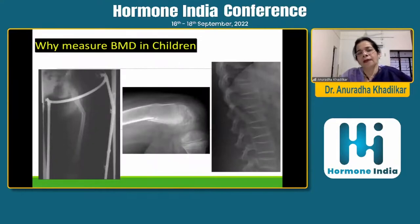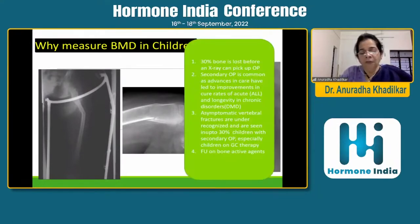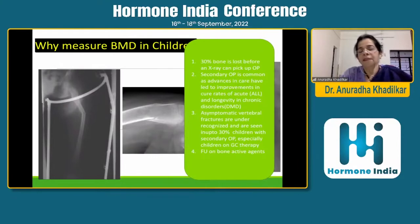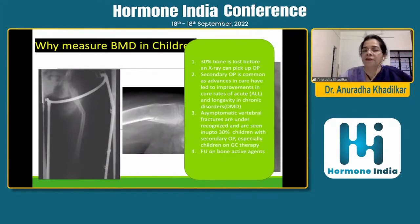Why do you measure bone density in children? When I started work in bone in children around 2000, I was told osteoporosis doesn't happen in children. But on an X-ray, at least 30% of the bone has to be lost before osteoporosis is visible. With the increasing medical arsenal of medications, secondary osteoporosis has become quite common. Asymptomatic vertebral fractures occur in around 30% of children with secondary osteoporosis. And if you want to follow up with bone active agents, you have to do a DEXA scan — that's the only way you can see it.